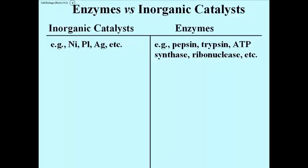Those are old names. More recently, meaning in the last 30 to 50 years, we've named most enzymes with the -ase at the end. So we have ATP synthase, which does like it says — it catalyzes ATP synthesis. Ribonuclease catalyzes RNA breakdown, which would then mean that deoxyribonuclease catalyzes DNA breakdown. We'll learn common names like these as we go along and look at different enzymes.